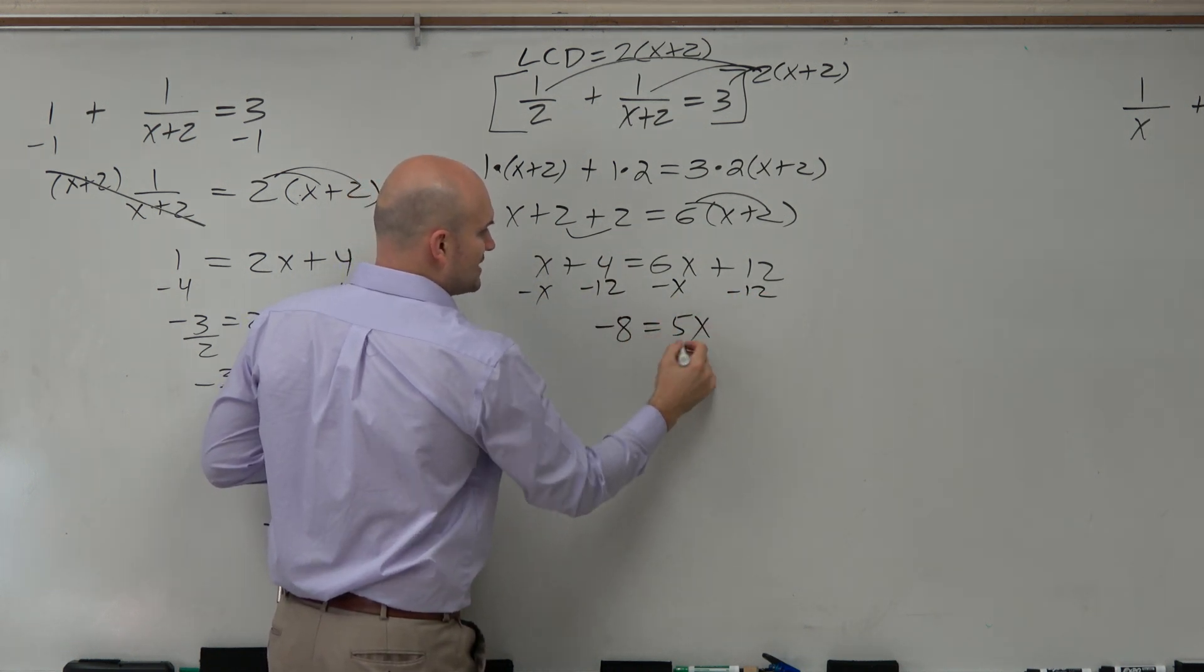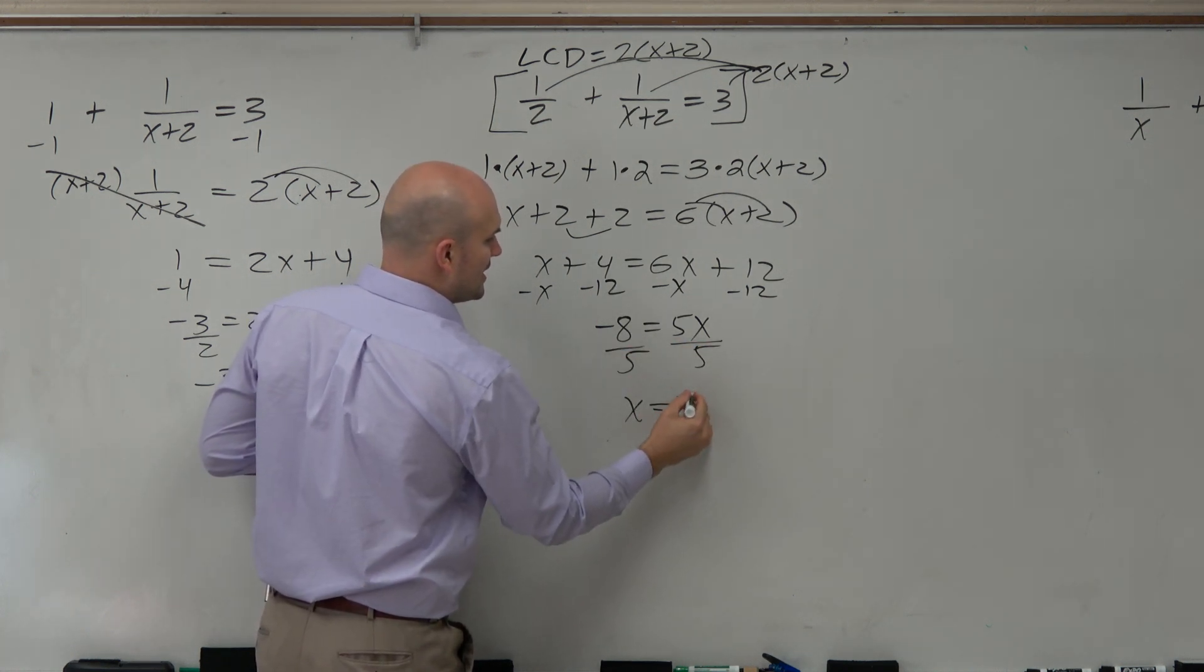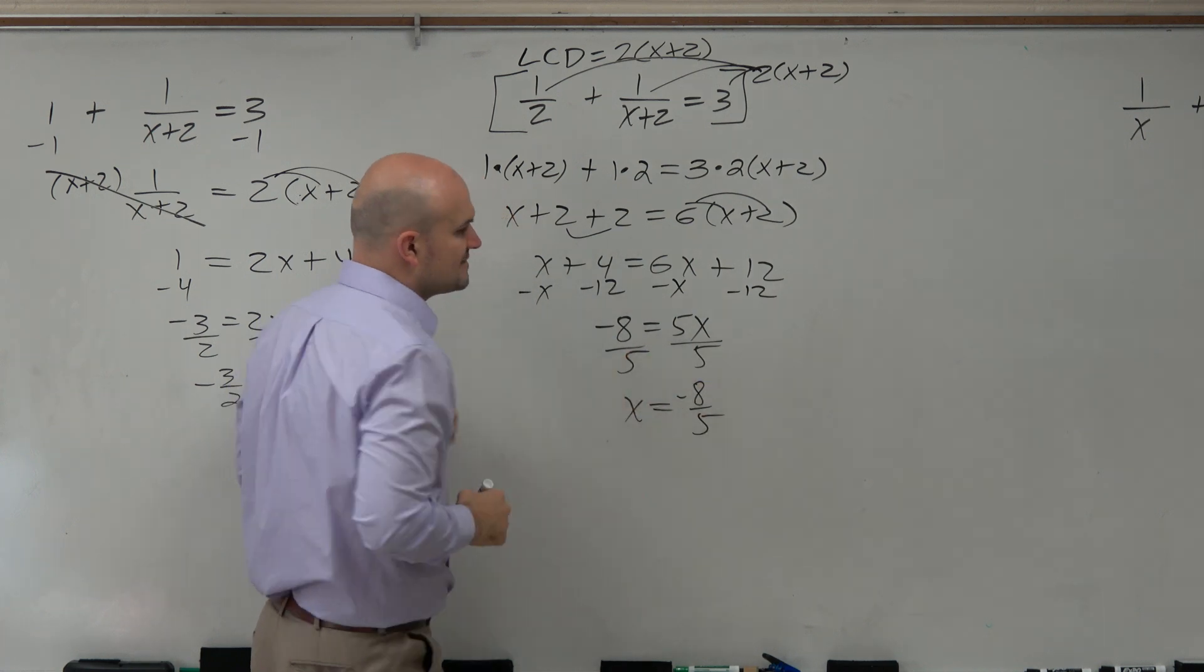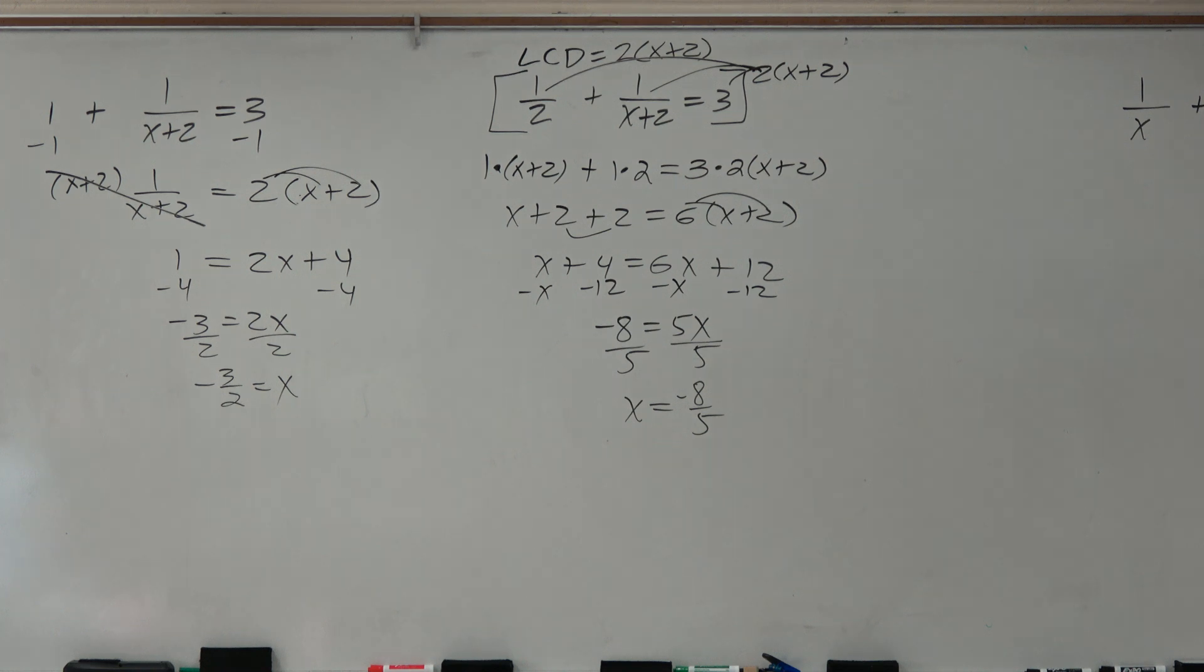Divide by 5. Rewrite it the other way: x equals negative 8 fifths.